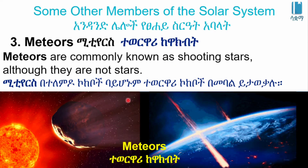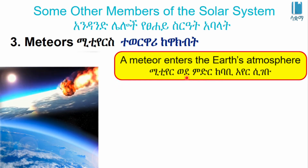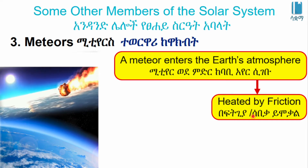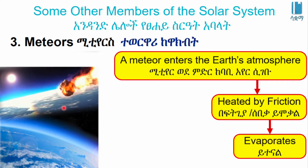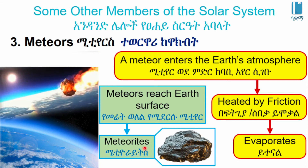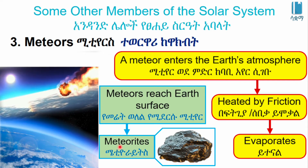Meteors enter the Earth's atmosphere and burn up. Meteorites are the remains of meteors that survive the process of evaporating in the atmosphere and reach the surface.